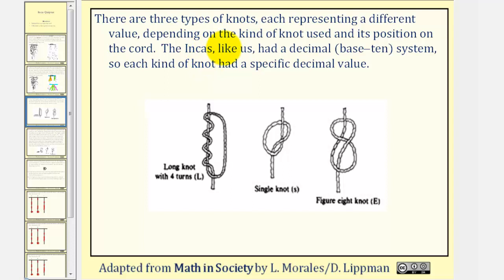There are three types of knots, each representing a different value depending on the kind of knot used and its position on the cord. The Incas, like us, had a decimal or base ten system, so each kind of knot had a specific decimal value. Here we have a long knot, a single knot, and a figure-eight knot.